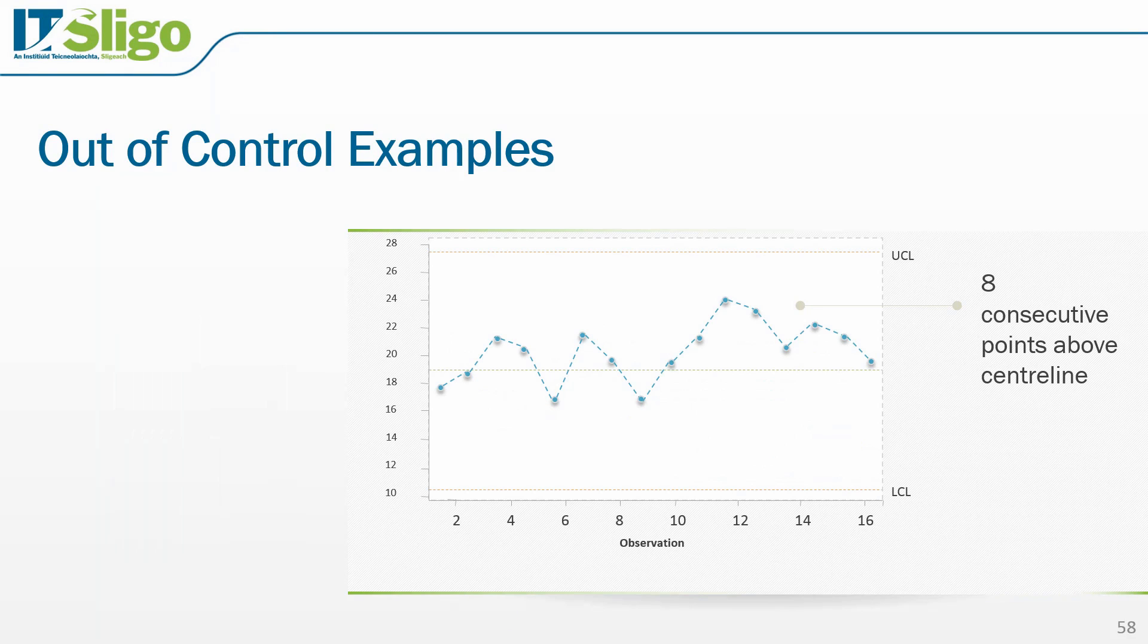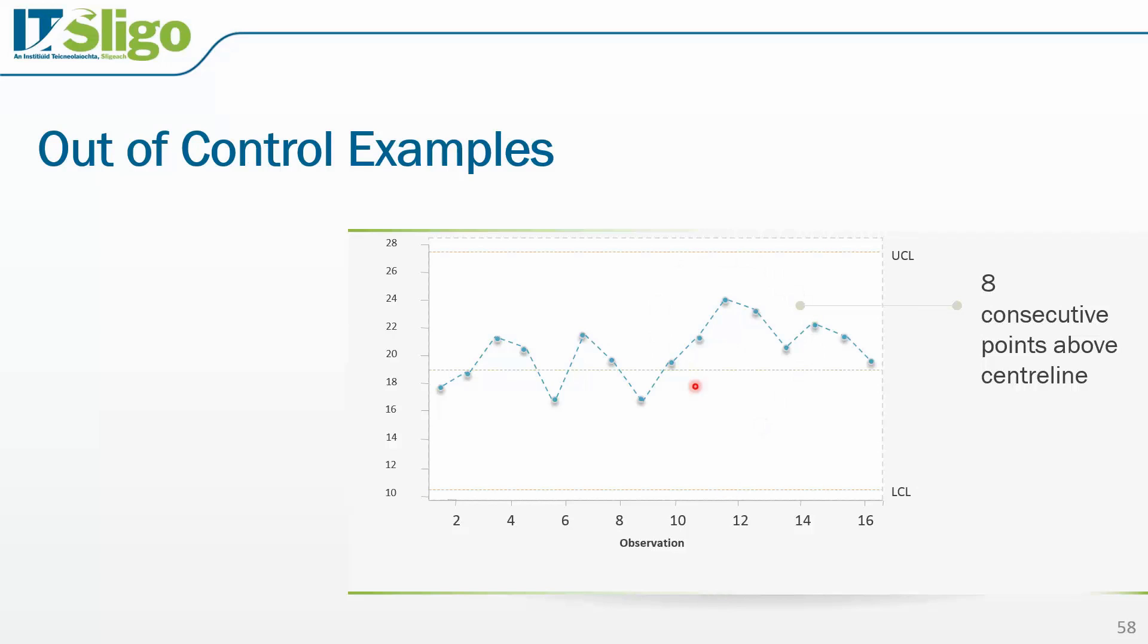Here we see an example of eight points above the centreline. Again, this is considered an out of control condition. What is probably occurring in our process is that our mean has shifted upwards. And this now represents our mean.